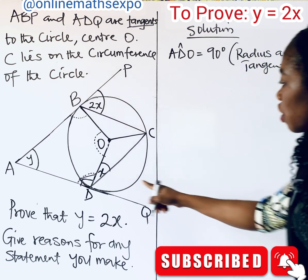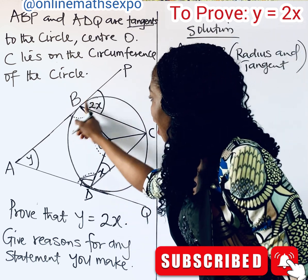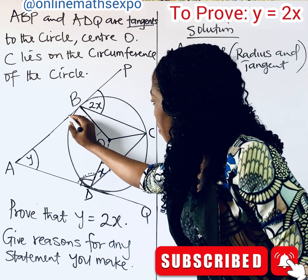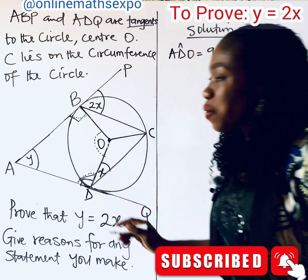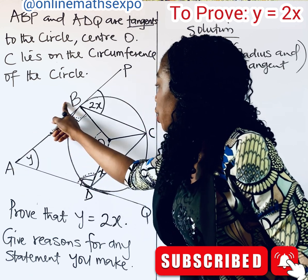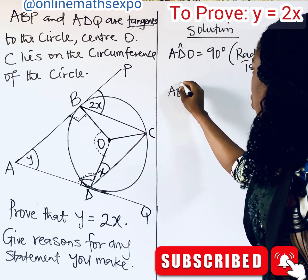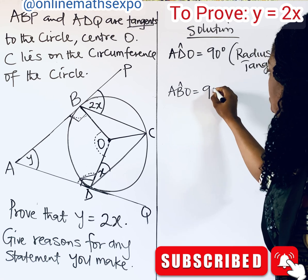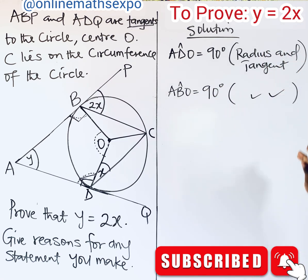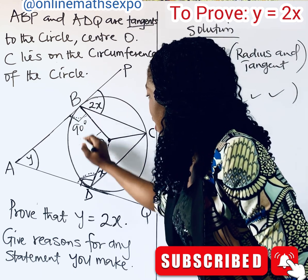Similarly, since this is also a tangent and this line is a radius, it also makes 90 degrees here. So angle ABO is also equal to 90 degrees, for the same reason — radius meets tangent at 90 degrees.